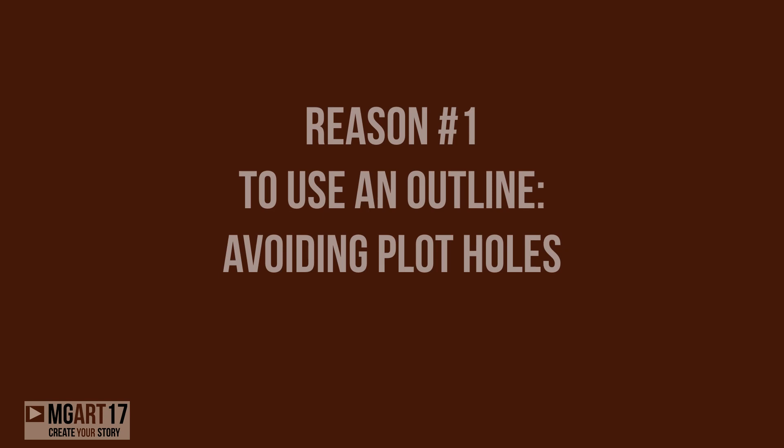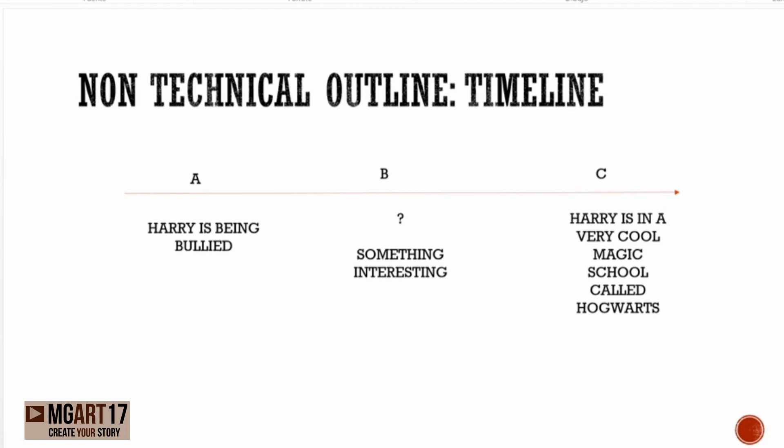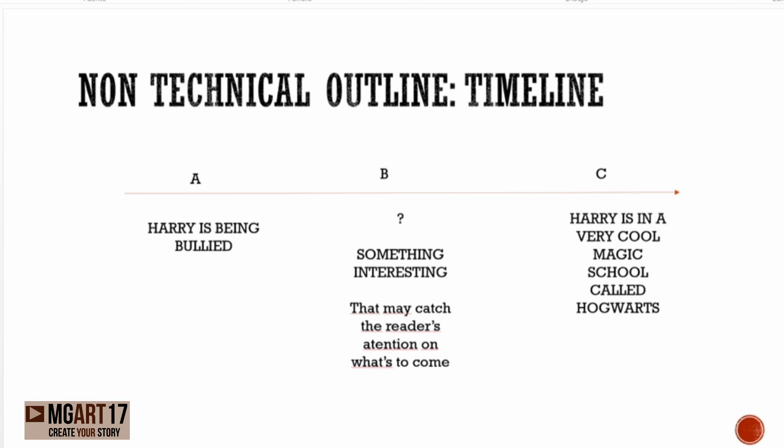Reason number one to use an outline: it avoids plot holes. You can have awesome events but maybe you do not even have a why it happens — and that's very common with comic artists. Maybe you have A and C in your story but you don't even have a B. An outline definitely helps fill that gap. Here I am using a non-technical method of outlining, which is a timeline.